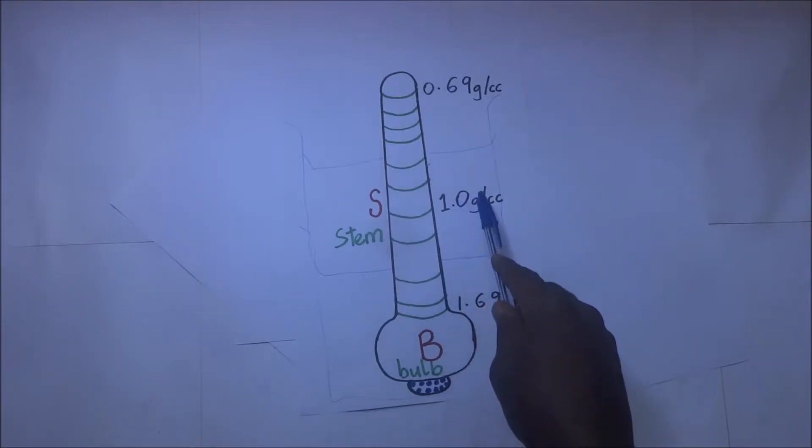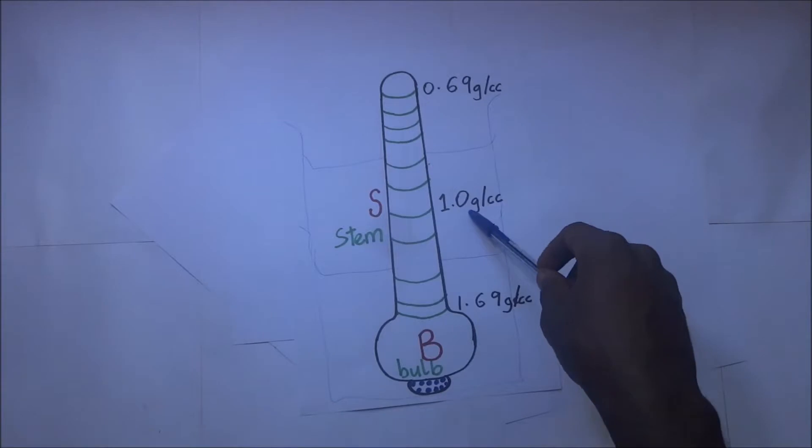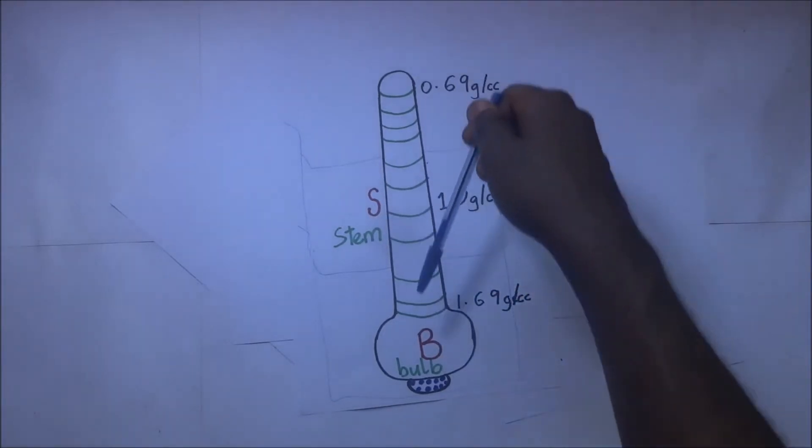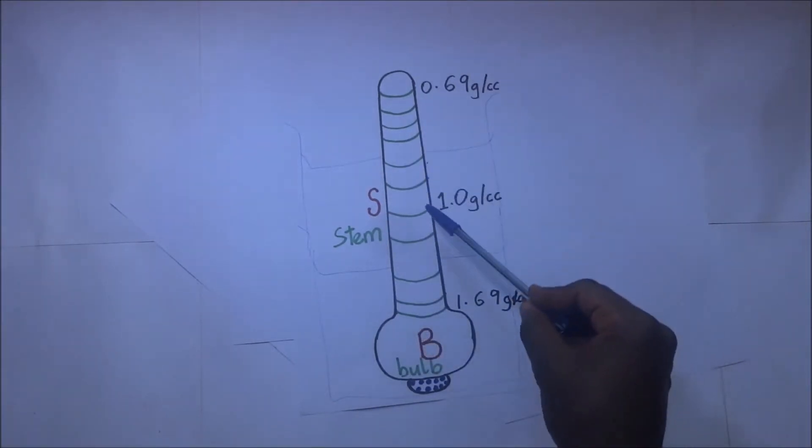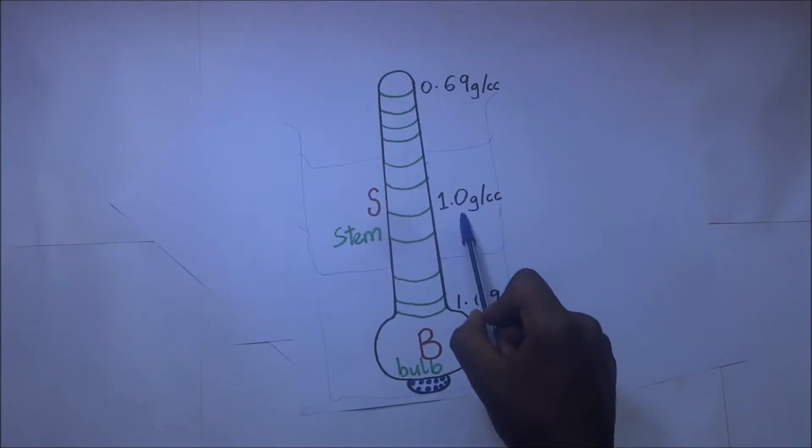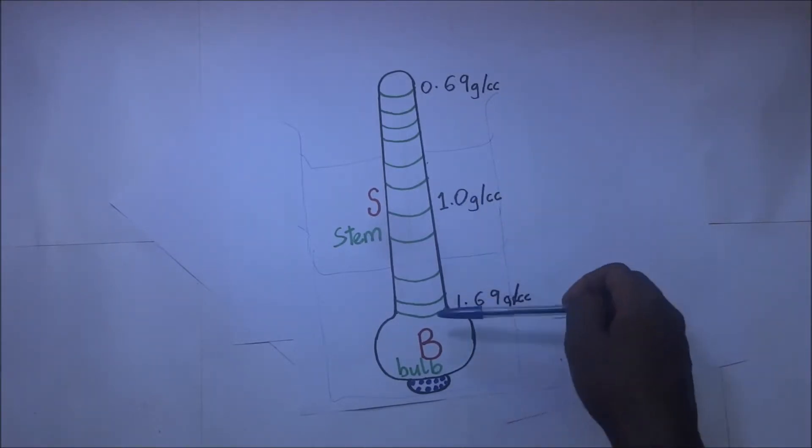If the density of any liquid is less than 1 gram per cc, this bulb will sink more. But if the density of the liquid is more than 1 gram per cc, the bulb will sink less in the liquid.